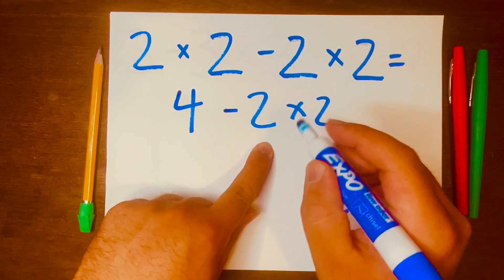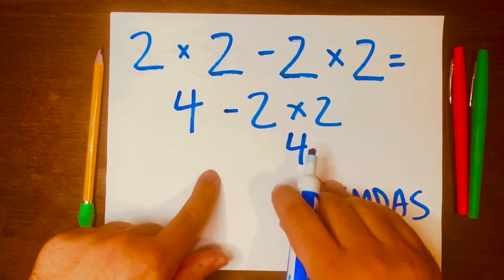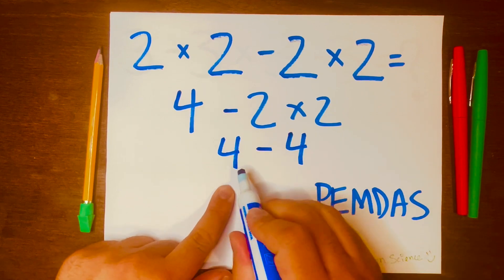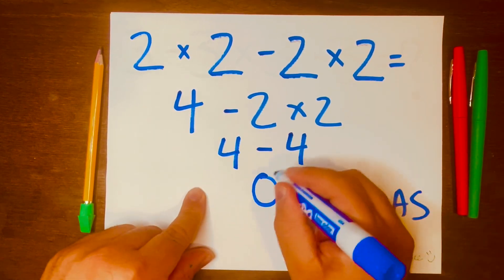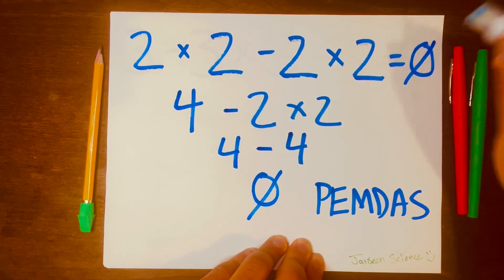So two times two will go first. Two times two is four, then bring down four minus, and then four minus four is zero. So the answer is zero. And there you go.